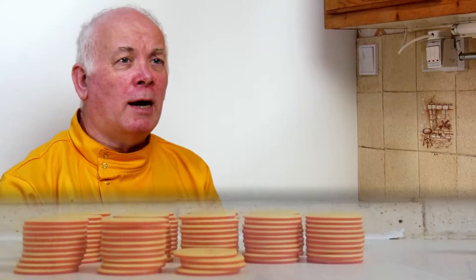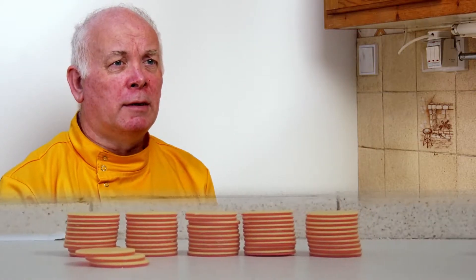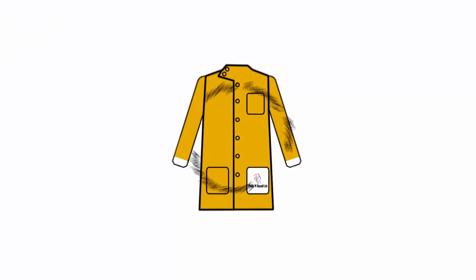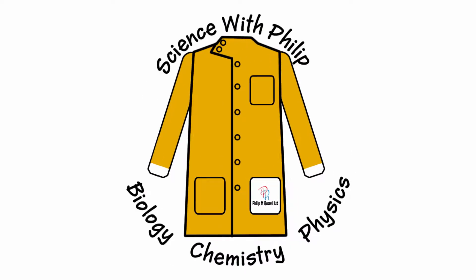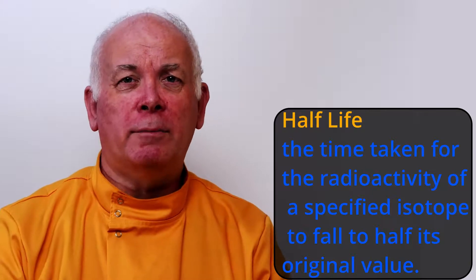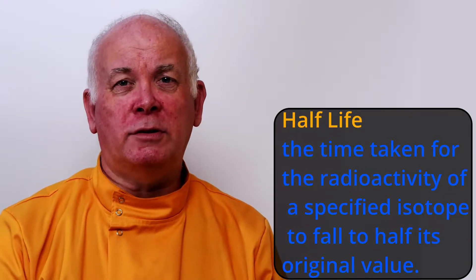Half-life is one of those concepts that students find really difficult to understand, so we're going to look at a very simple experiment here to see if we can make it nice and simple. Half-life has a difficult definition: it's the time taken for half the amount of a substance to disintegrate or change to another substance.